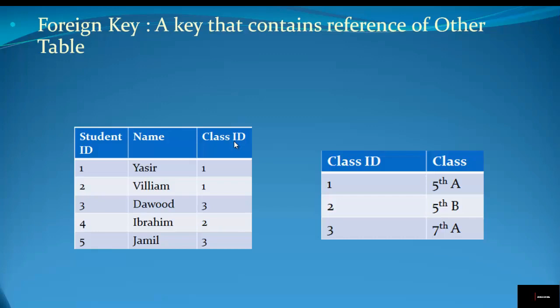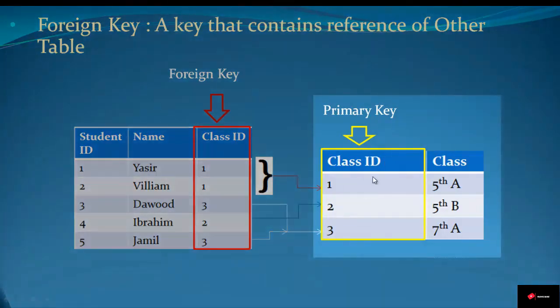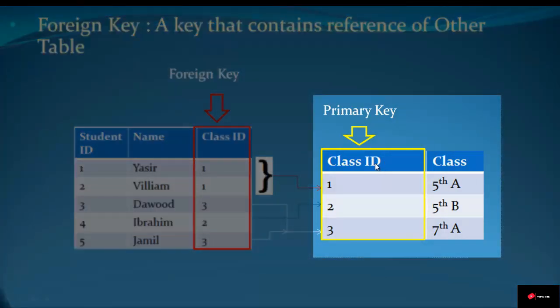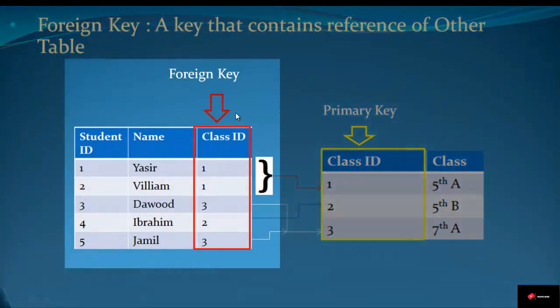The third type of key you may come across is called a foreign key. A foreign key is a key that contains the reference of another table. For example, here we have two tables where one table contains the primary key class_id, which is referred to as a foreign key in the other table.